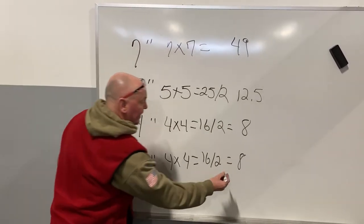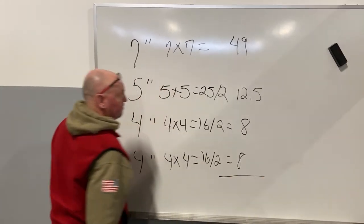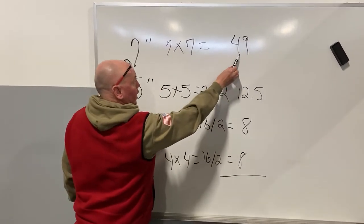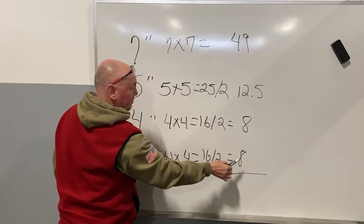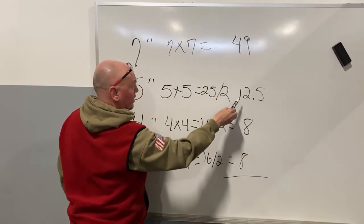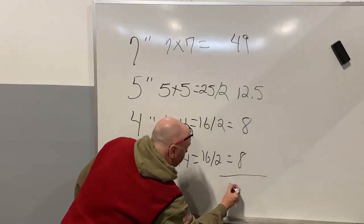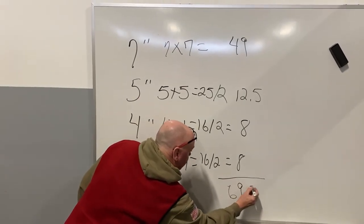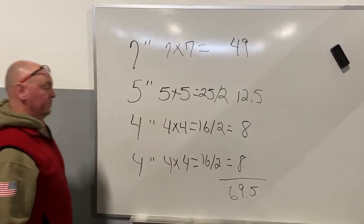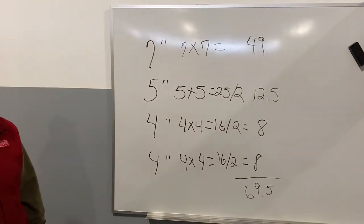Now what I do at the end of this, I add these all up. So I'm going to add 100%, 50%, 50%, 50%, so it's 49, 12.5, 8, 8, equals 69.5 square inches.